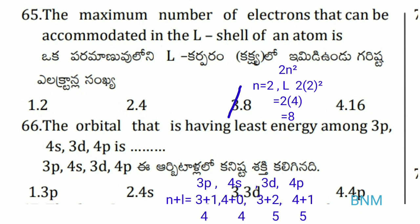The orbital having the least energy among 3p, 4s, 3d, and 4p: we apply the (n + l) rule. For 3p: n=3, l=1, so n+l=4. For 4s: n=4, l=0, so n+l=4. For 3d: n=3, l=2, so n+l=5. For 4p: n=4, l=1, so n+l=5. The least n+l value is 4, and for equal n+l, lower n has less energy. So 3p has the least energy.